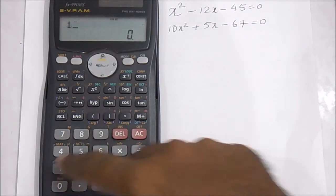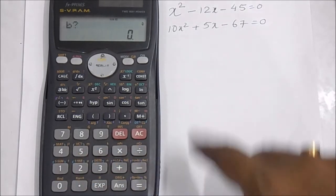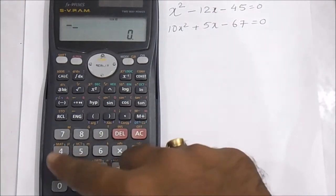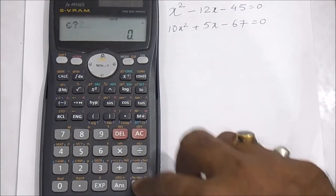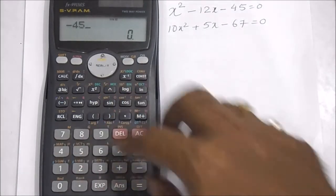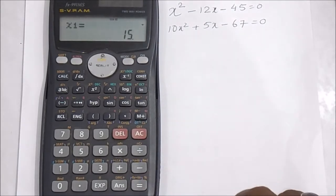So the value of 'a' is 1. Press 1, then equals. 'b' is the coefficient of x, which is -12. Press -12, then equals. 'c' is -45. Press -45, then equals. You'll get x₁ = 15 and x₂ = -3.